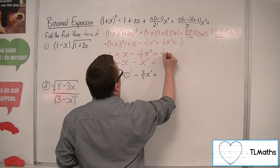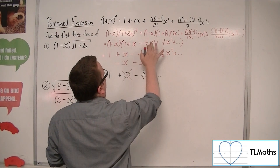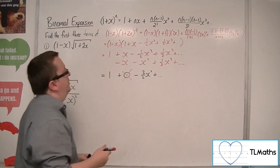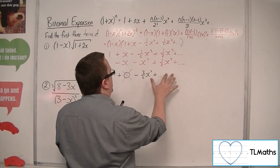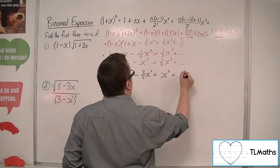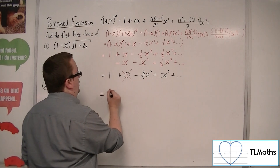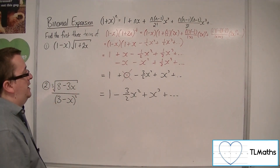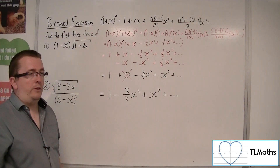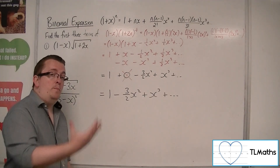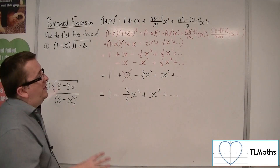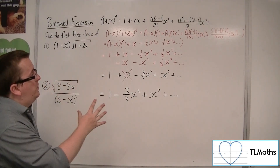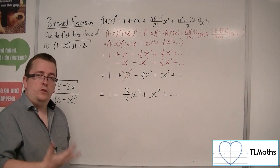Now I have 1 times one-half x³ plus other stuff, and minus x times minus one-half x² is plus one-half x³ plus other stuff. So this next term is one-half x³ plus x³, giving us three terms in total: 1, take away three-halves x², plus x³. These are the first three terms of the expansion of (1 minus x) times the square root of (1 plus 2x). This is a nice example where we had to go one step further — if you can do this type of problem, anything more straightforward you should be fine with.